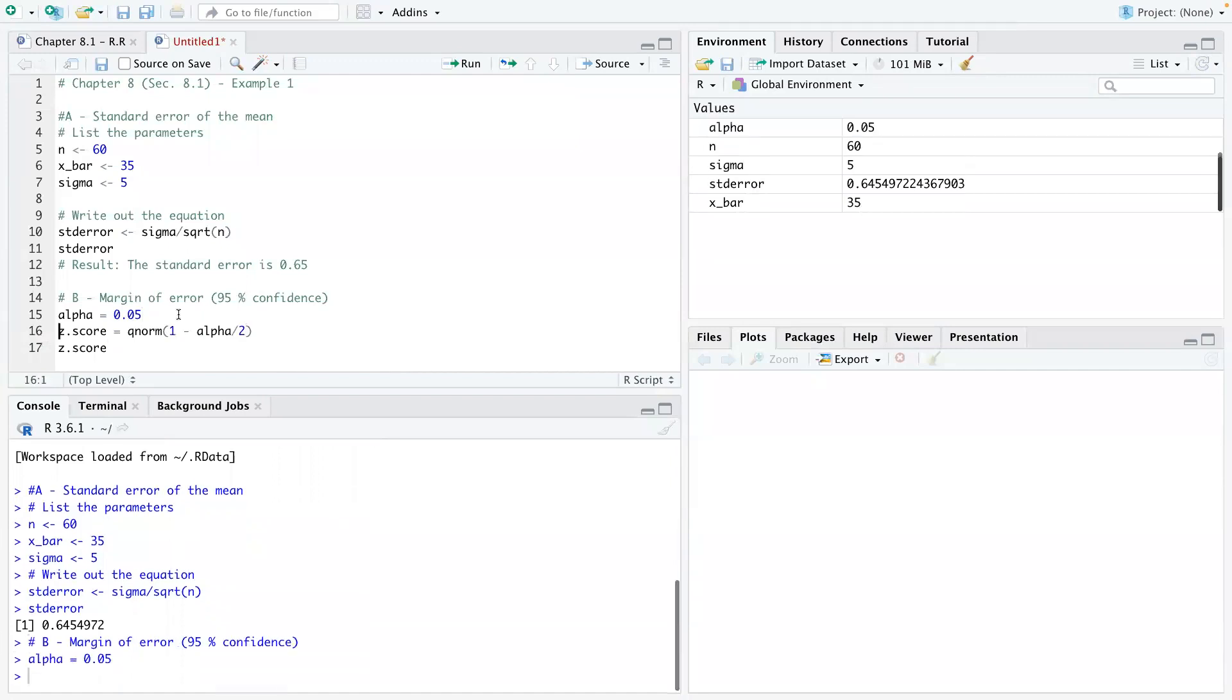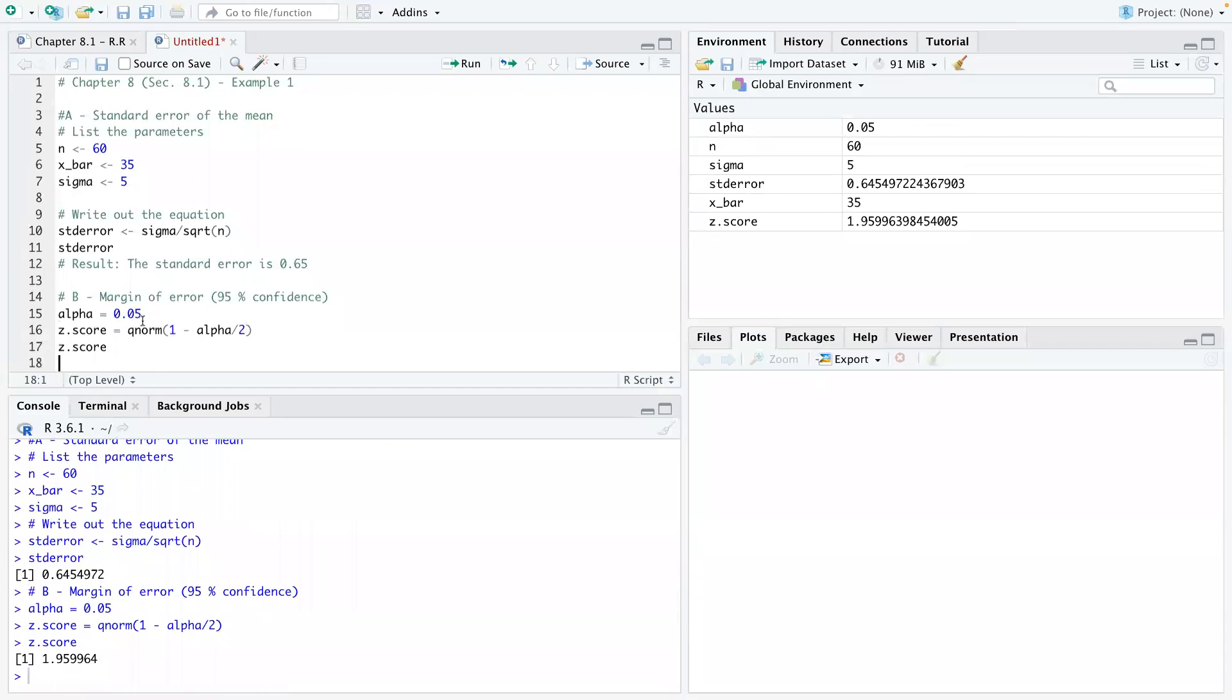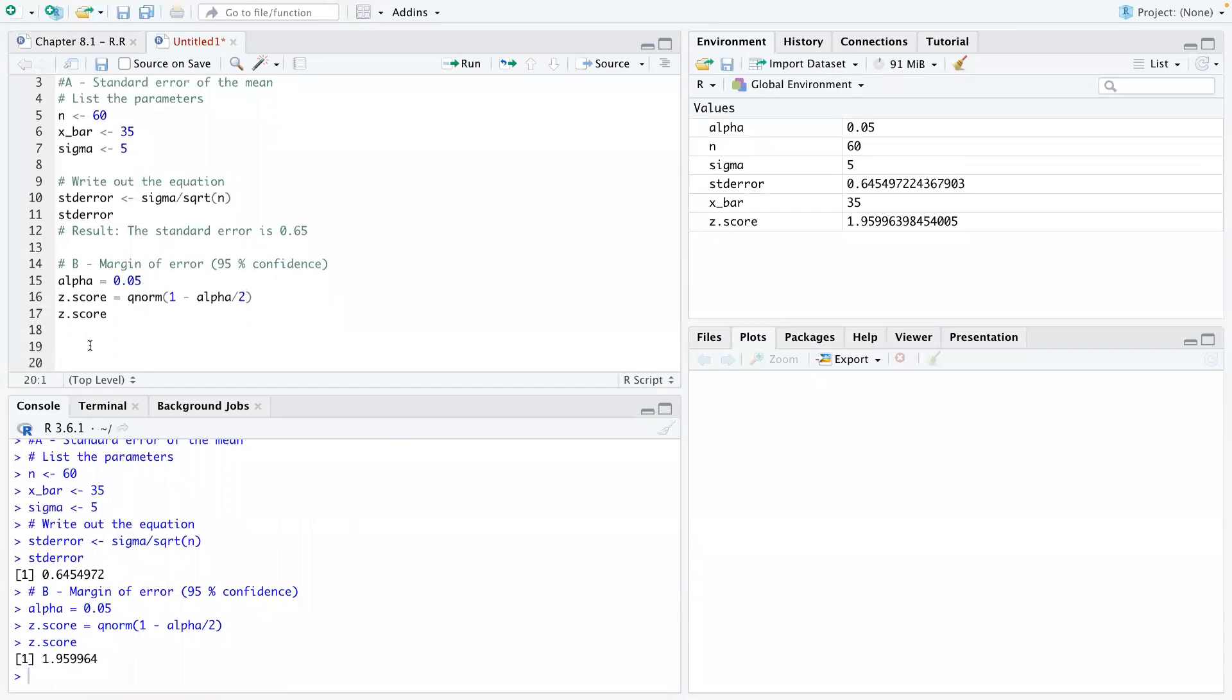So let's run this. All right. So our z-score is 1.96 or 1.95599. That's going to be our z-score.